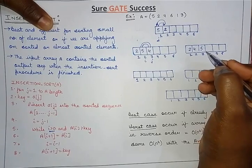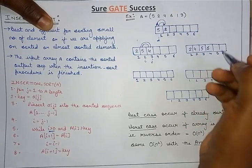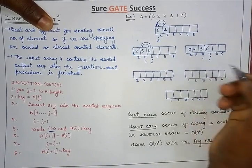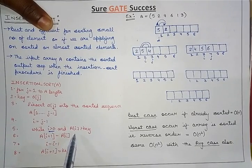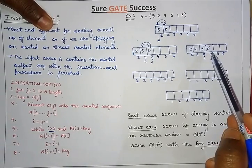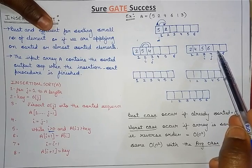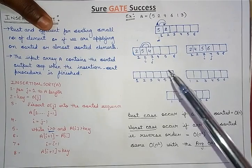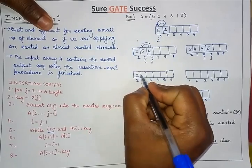The next element to be inserted is 6. We check: j points to 6 and i is at the previous position. The first condition — i greater than 0 — is true. We check a[i] greater than key: a[i] is 5 and key is 6, so 5 is not greater than 6. The condition is false, so we escape — no swap is needed for this element.